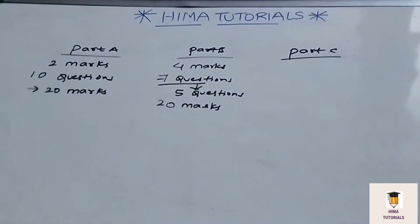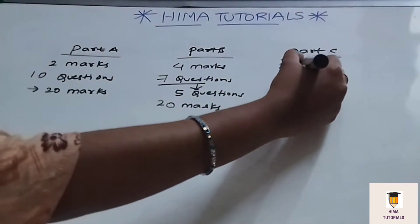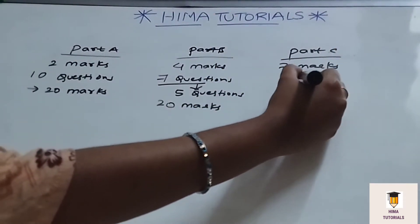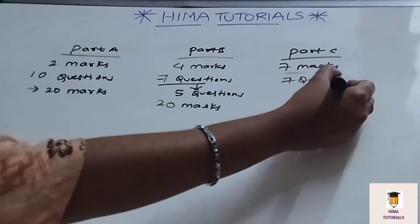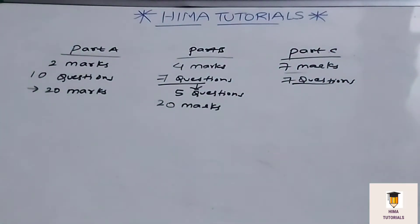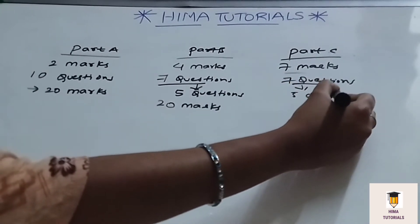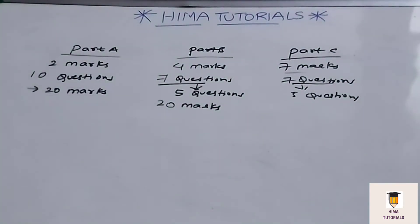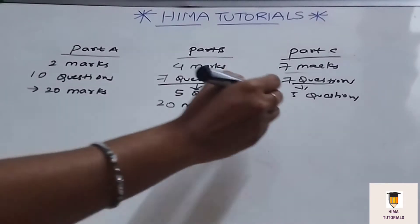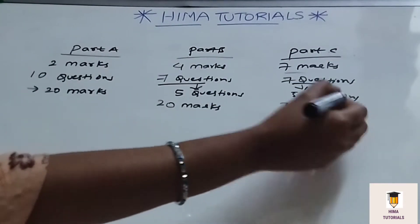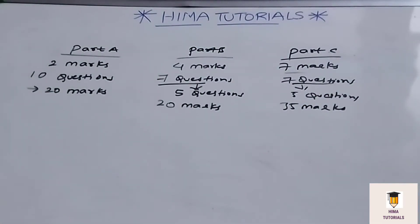Coming to Part C, here 7-mark questions will be given. There are also a total of 7 questions, and out of these 7, you have to attempt 5 questions — choice is there. That means 5 × 7 = 35 marks. Total: 20 + 20 + 35 = 75 marks.